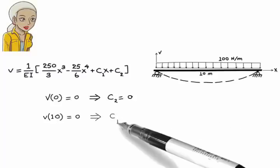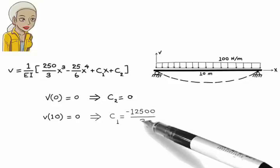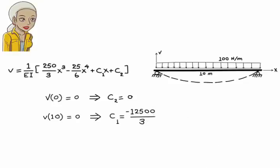The second condition gives, c1 equals negative 12,500 over 3. So, here is the beam's deflection equation in its simplified form.